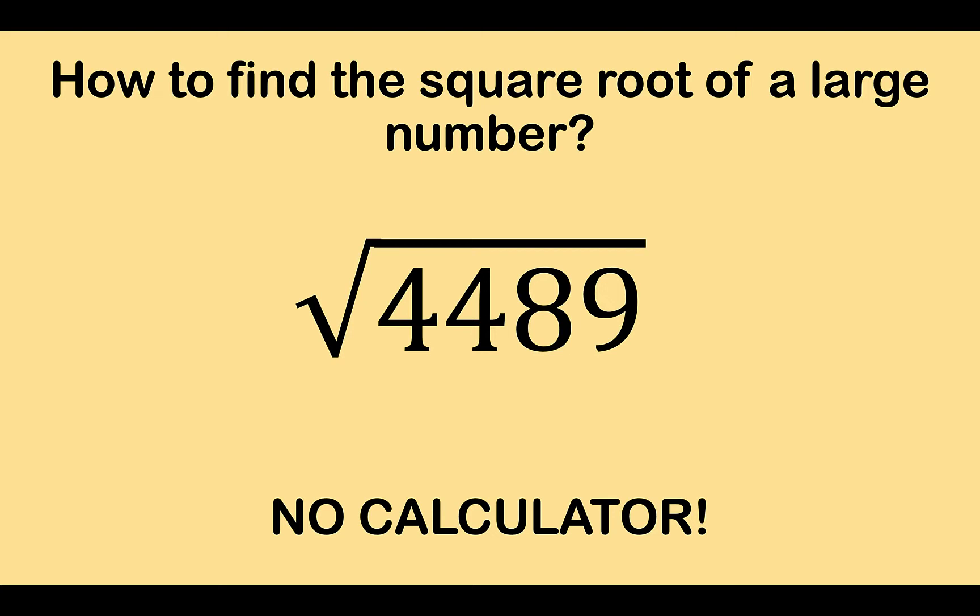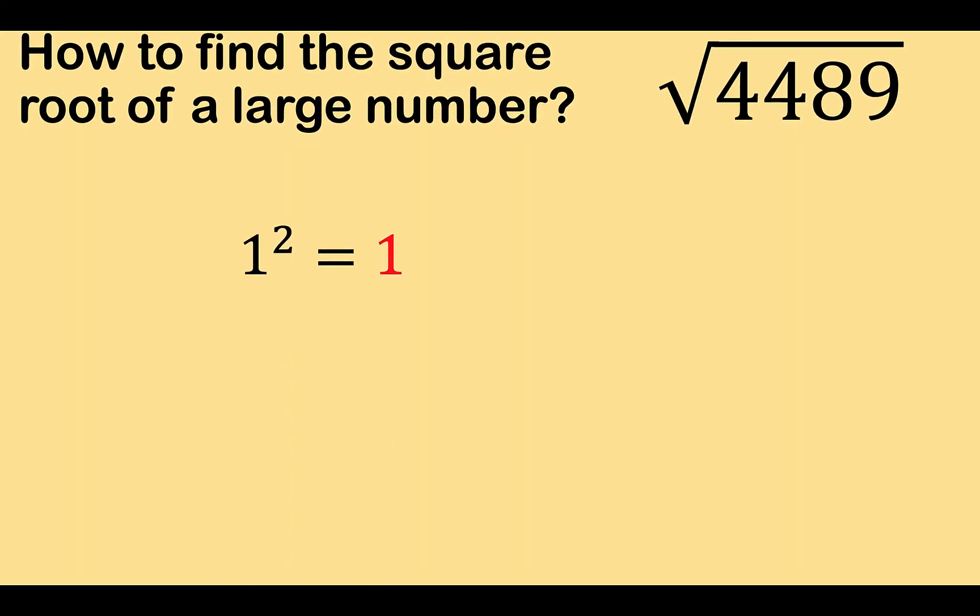So how do we find the square root of 4,489? Here's the technique. Again, our assumption here is this is a perfect square. So the first thing that we need to do is remember what are some of the perfect squares from 1 to 9.